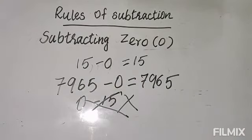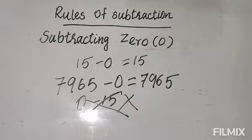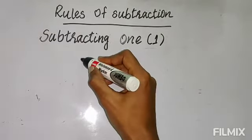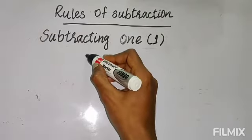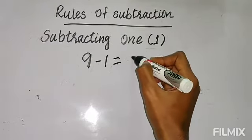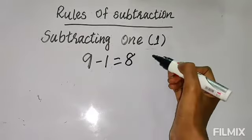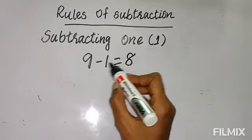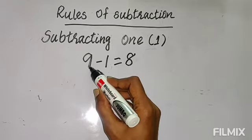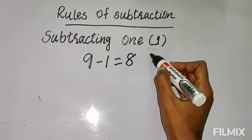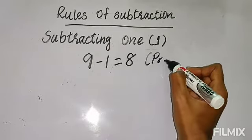Whenever 0 comes, you need not sit and do the calculation — directly you can write the number itself. Next: subtracting 1. Suppose if you take 9 and you minus 1, the answer is 8. If you compare 9 and 8, the 8 comes just before 9. The number that comes before we call the predecessor.